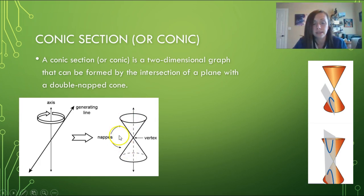We call these individually naps. Where they meet is a vertex, so you can essentially just think of it as two ice cream cones that have been put tip to tip.